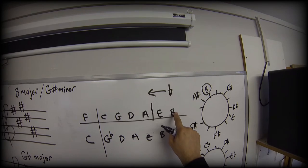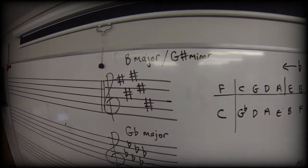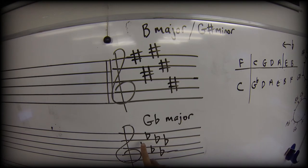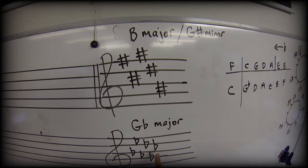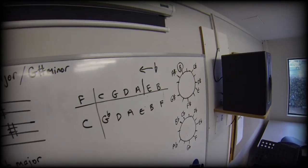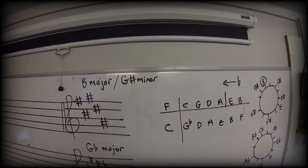I use these flats, B flat, E flat, A flat, D flat, G flat. And the key signature looks like this, B flat, E flat, A flat, D flat, G flat, and C flat. Used the C flat as well, didn't I?